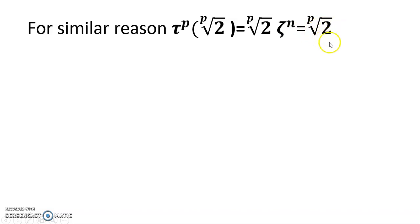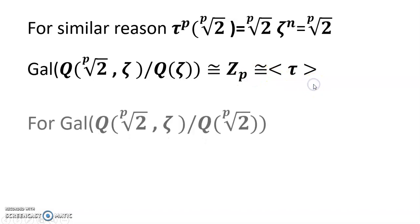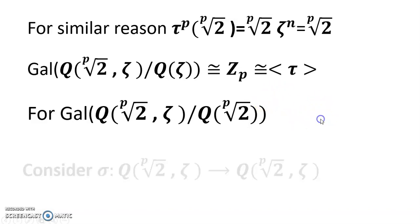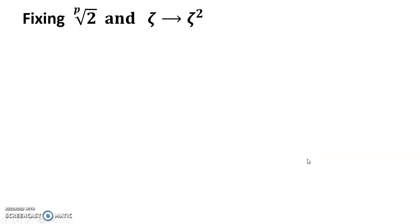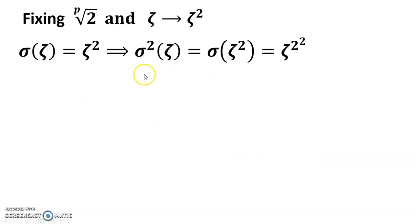So we can write Gal(ℚ(2^(1/p), ξ) / ℚ(ξ)) is isomorphic to ℤ_p, generated by τ. Now for Gal(ℚ(2^(1/p), ξ) / ℚ(2^(1/p))), we define σ fixing 2^(1/p) and sending ξ → ξ². So σ(ξ) = ξ².